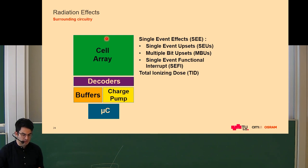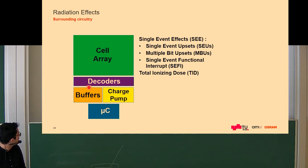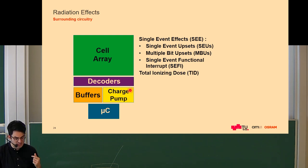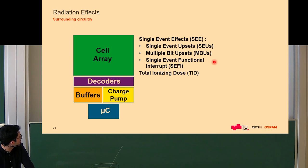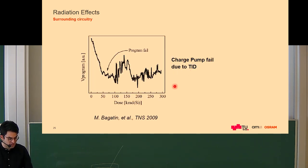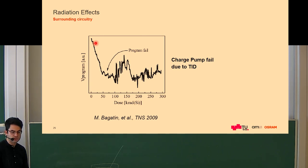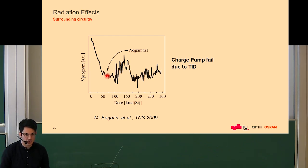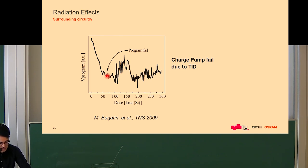Never forget the surrounding circuitry in your system, especially the charge pump necessary to program or erase your device, and the decoders. For example, if the voltage generation circuit — in particular the charge pump — after a certain total ionizing dose can no longer generate the correct voltage for programming, you get a program fail, which is the same as your whole memory failing. This concept of surrounding circuitry will be important later for defining a failure.